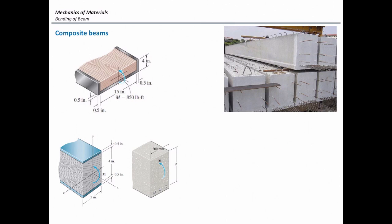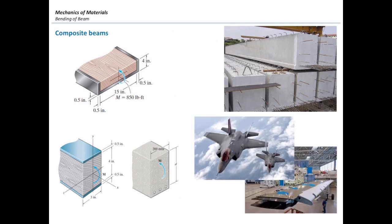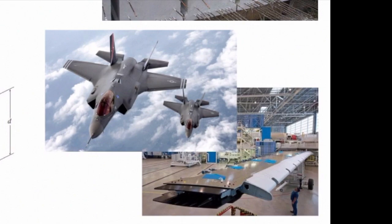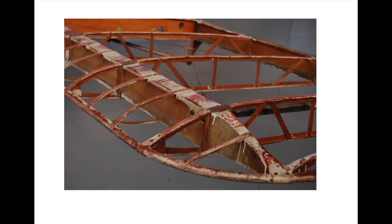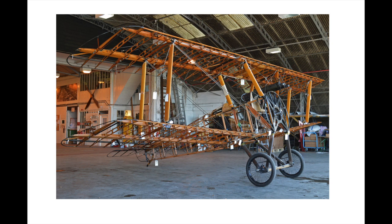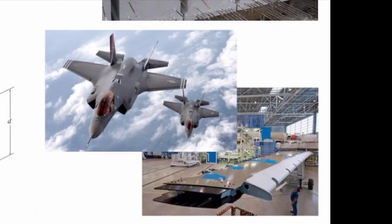Another example is this one. If you are an aerospace engineer, you will work with these kinds of things. These are composite beams because we combine different materials to make airplanes lighter, stronger, and more efficient. You can see this in vehicles and many different applications.